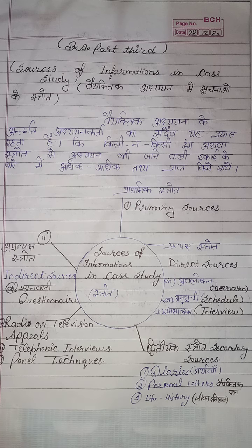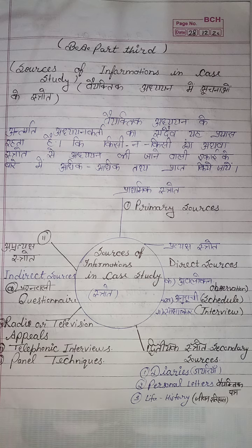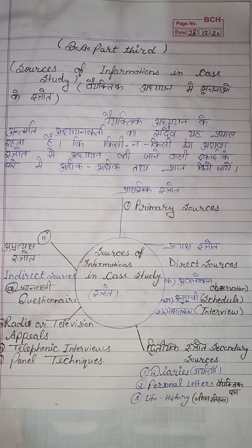When the researcher collects facts through direct methods, these are called direct sources of material collection. Among the primary direct sources, number one is Observation. Observation is the method under which the researcher goes to the field related to the subject and impartially observes various events and conditions, thereby collecting important material.